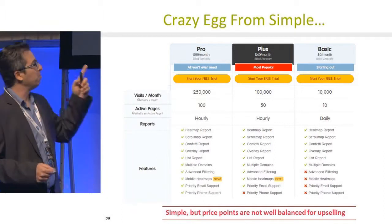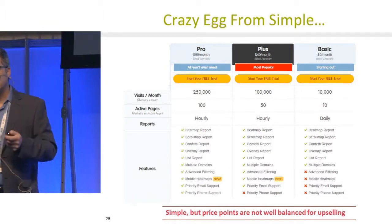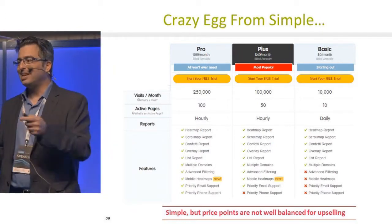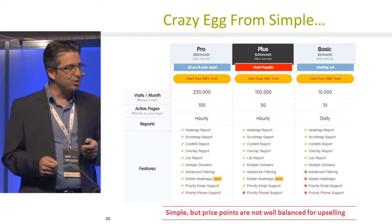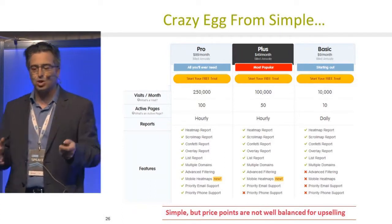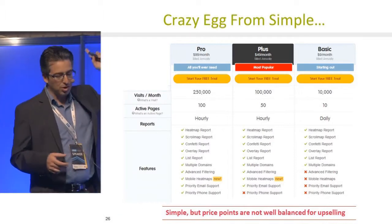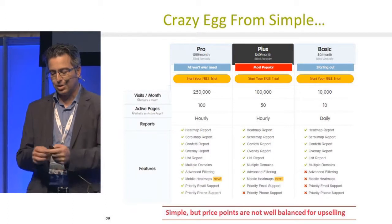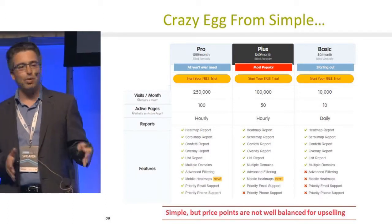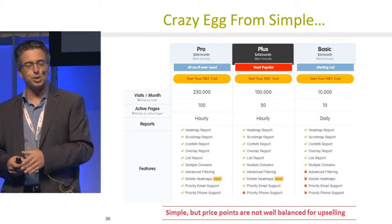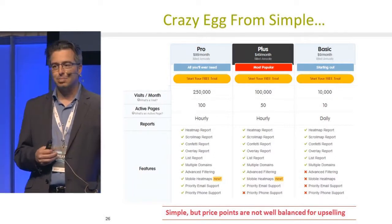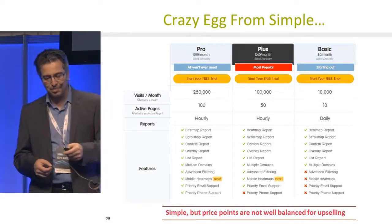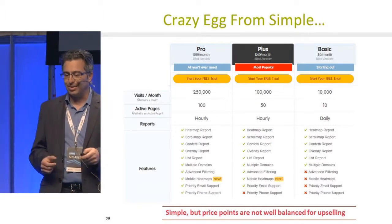Crazy Egg is a classic SaaS pricing structure: three options, highlighting the middle as most popular. In most cases, that's not actually true — the basic entry option is the most popular, and only a few upgrade. The price points here aren't well-balanced; they look linear — $9, $49, $99 — with equal differences throughout. Normally you'd expect smaller differences at the beginning and much larger differences at the high end.